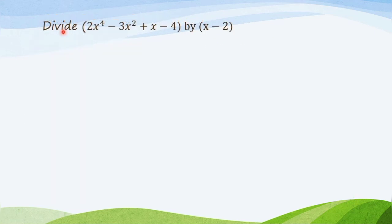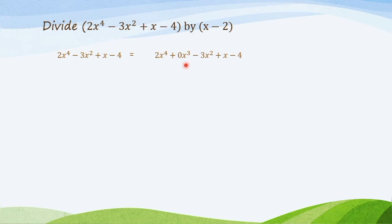Example 2: divide 2x to the 4th minus 3x squared plus x minus 4 by x minus 2. You will notice that this polynomial has a missing term, so we will put 0 as the coefficient for that missing term. So 2x to the 4th minus 3x squared plus x minus 4 equals 2x to the 4th plus 0x cubed minus 3x squared plus x minus 4. Bring down all the coefficients: 2, 0, negative 3, 1, and negative 4. The divisor is x minus 2, so r equals 2.